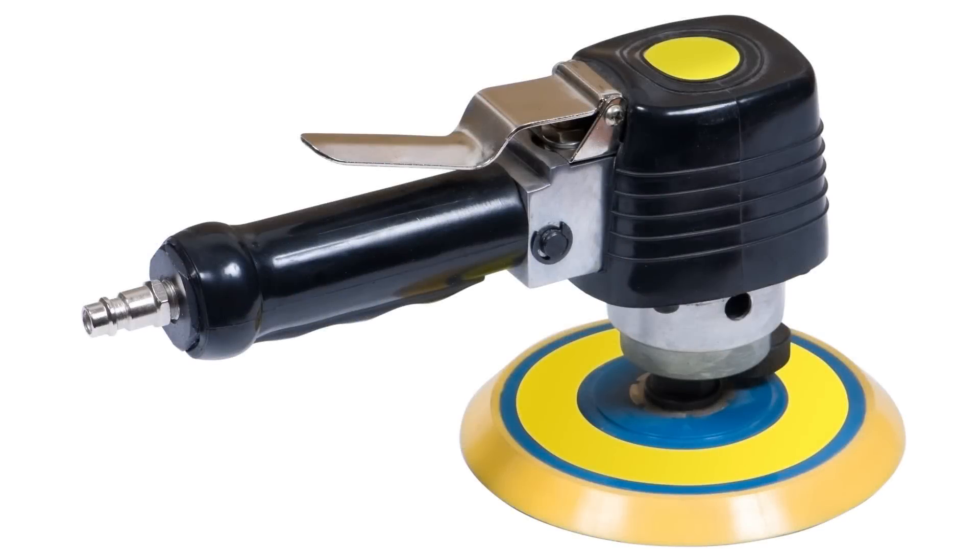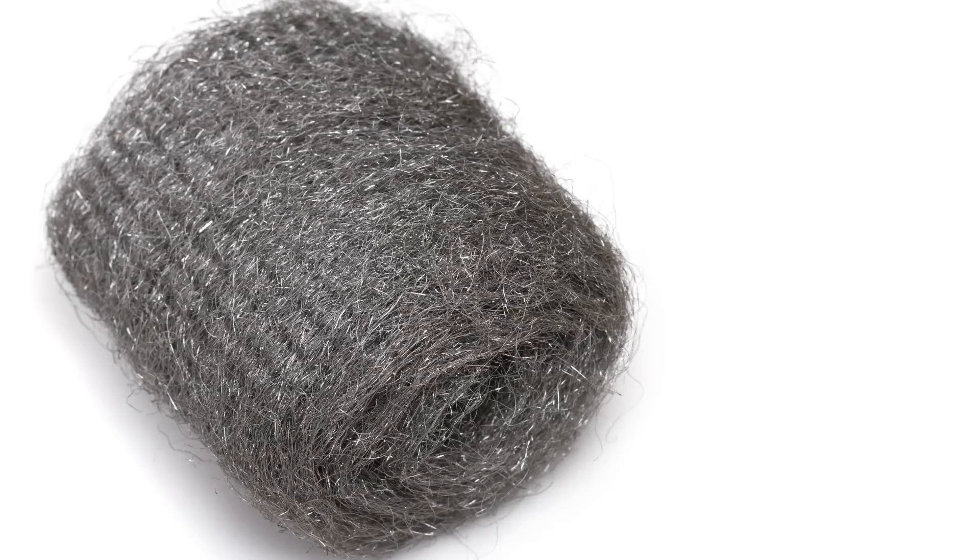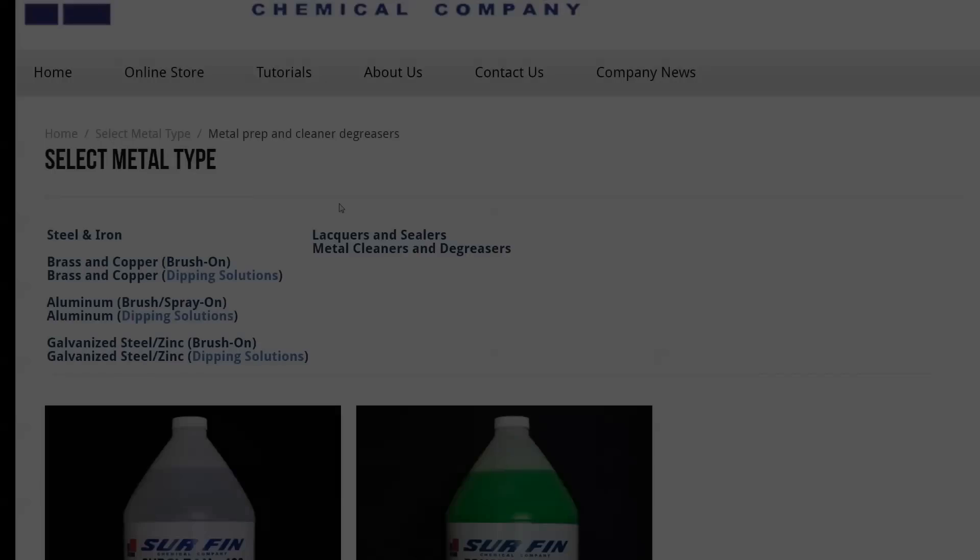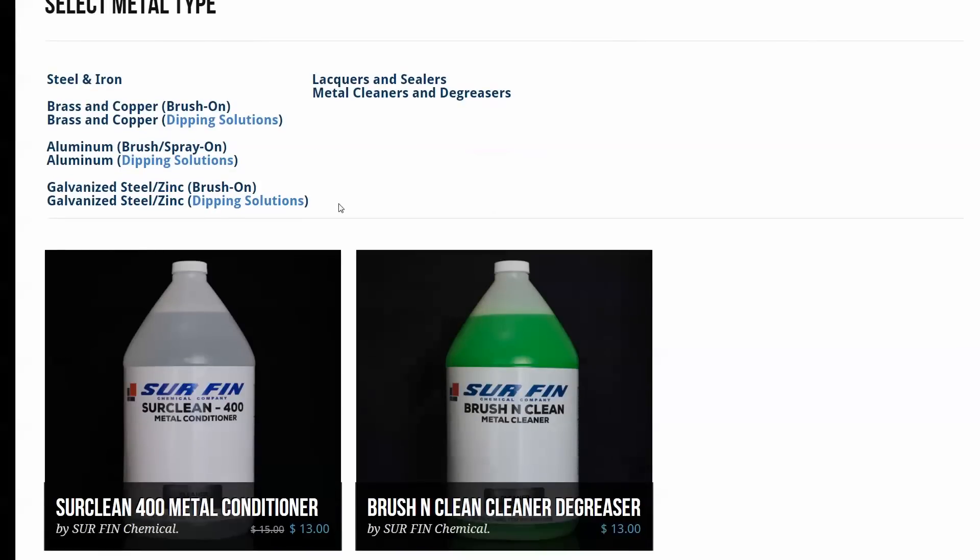To prepare your metal, it's recommended to use common sanding tools or even steel wool to descale your part. But for large parts and for convenience, it's recommended to use a metal prep solution like Circlean 400.